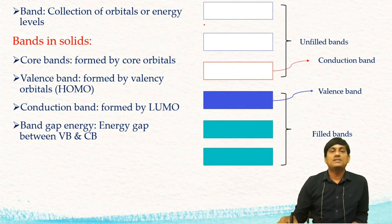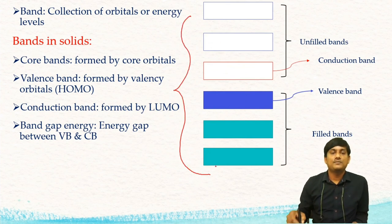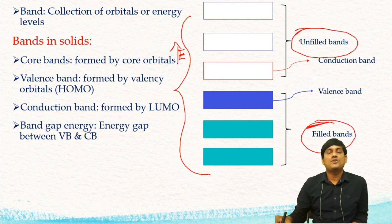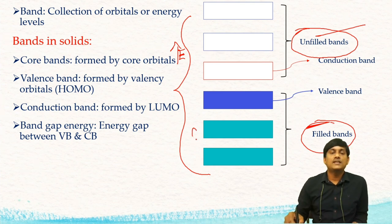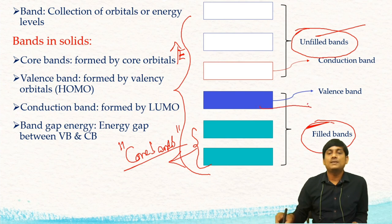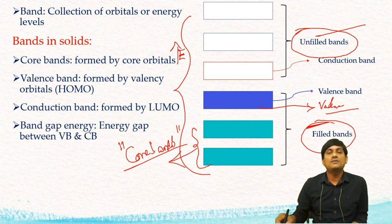Here you can find three bands in this crystalline solid. Let us take a crystalline solid which has six bands. Among six bands, the first three are filled with electrons — these are called filled bands — and the next three are not filled with electrons, these are called unfilled bands. Among filled bands, the inner two bands are called core bands, since these are formed by the core orbitals. The outermost filled band is formed due to valency orbitals, so it is called the valency band — it is the filled band with the highest energy.